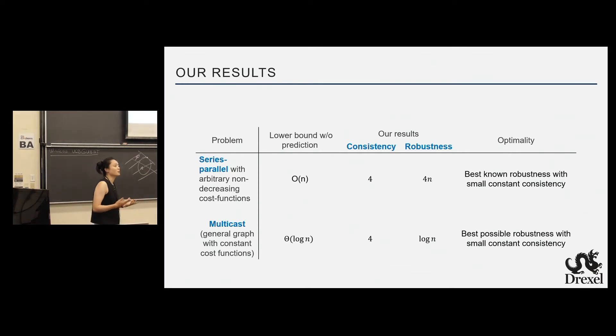And we also discuss the multicast game, which is more classic and people probably know this better. Where we have a general graph with constant cost functions. The prior work has shown that as we saw before, no one can achieve better than log n approximation with resource-aware mechanisms, where we achieve log n robustness and 4 consistency again. Best possible robustness with small constant consistency. And given the time I have, I'm probably not going to talk anything about the series parallel. We're going to just focus on multicast and give you guys a sense of what prediction is useful, how do we use this prediction in the decentralized mechanism world to achieve good price of anarchy.